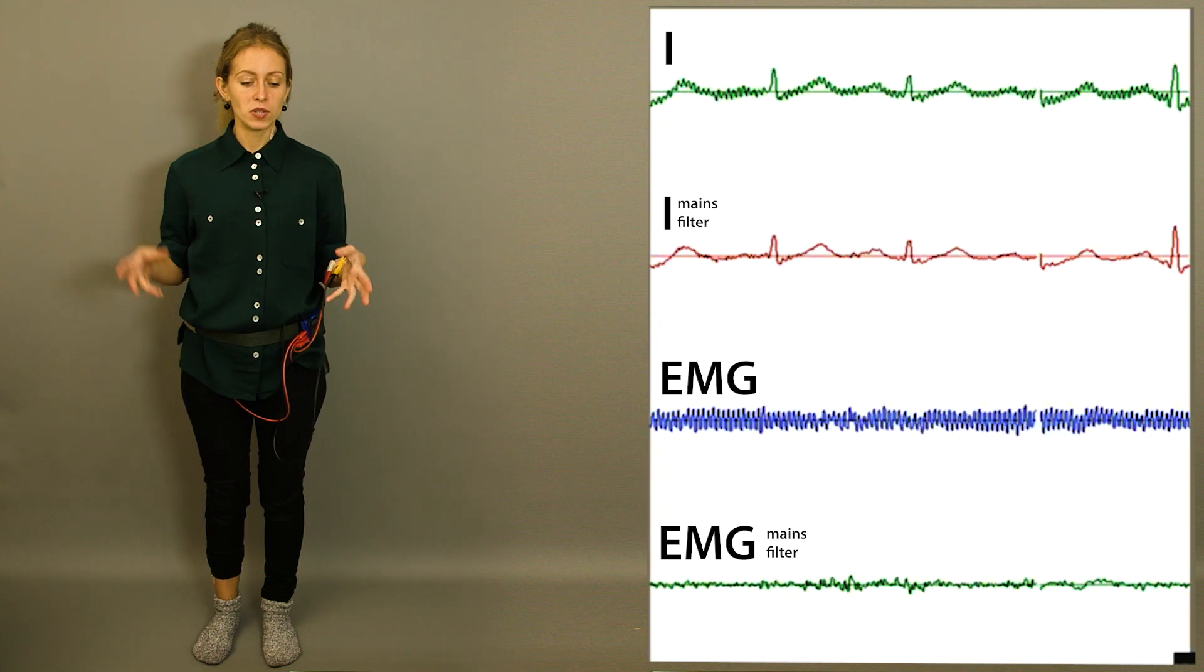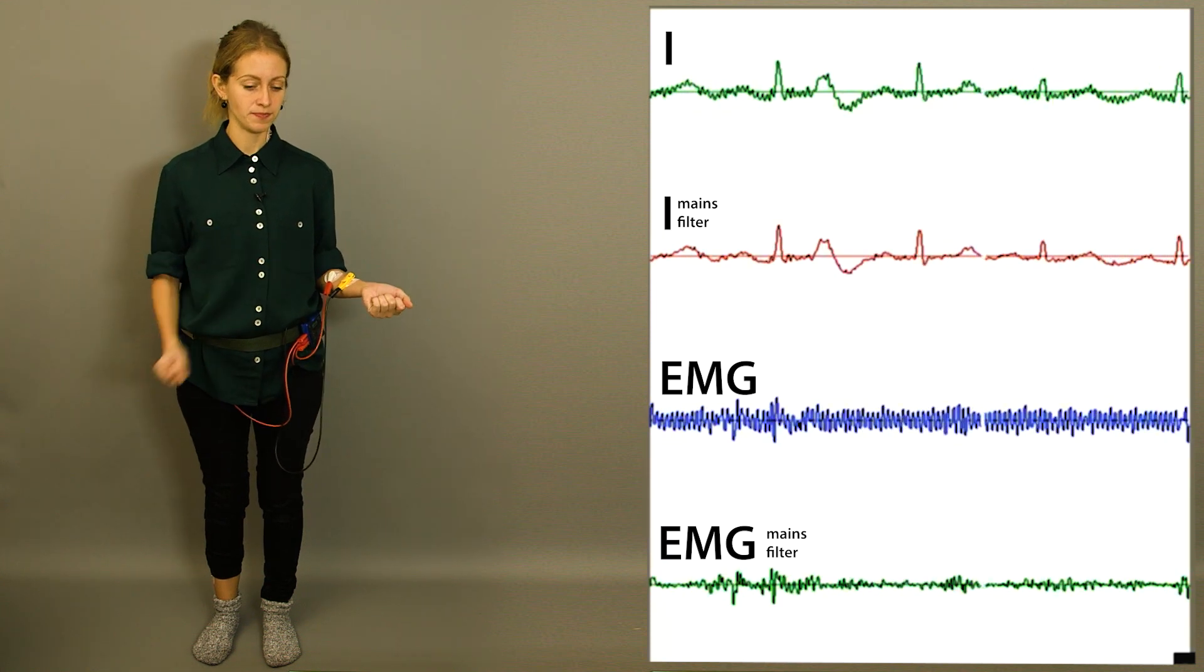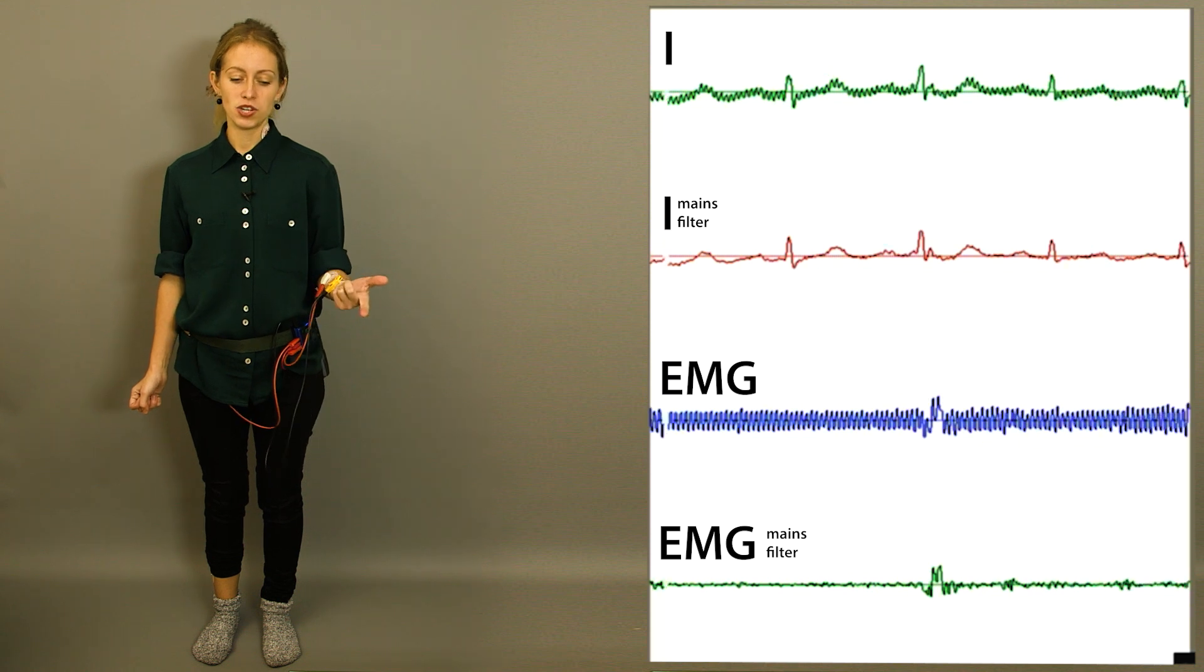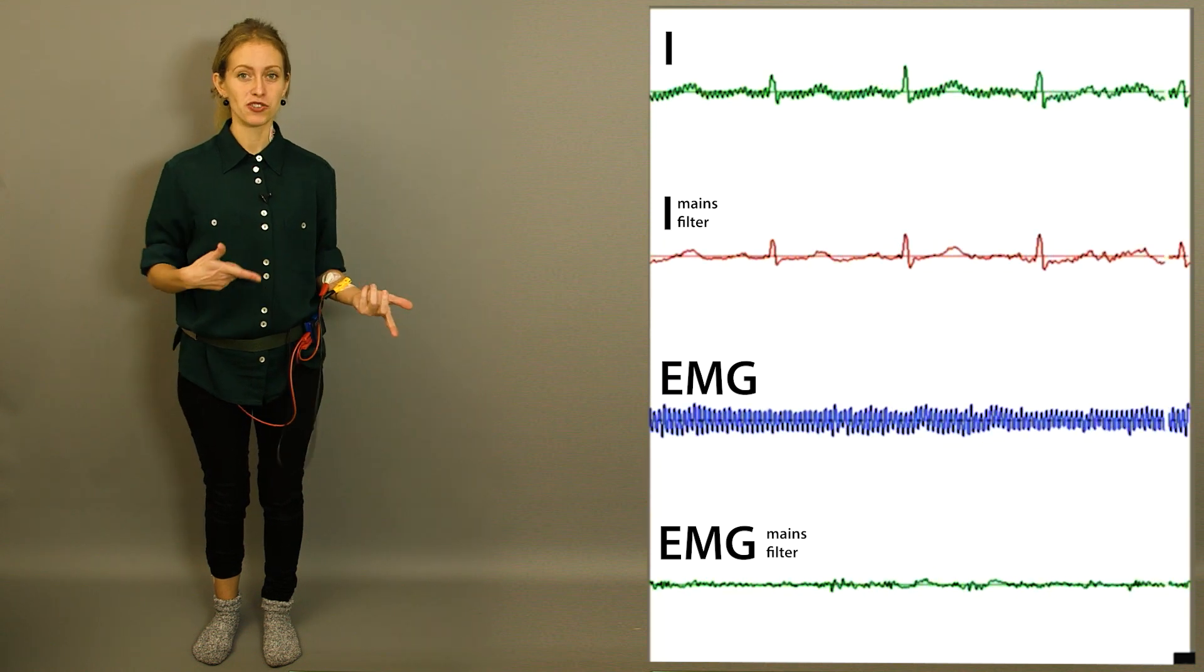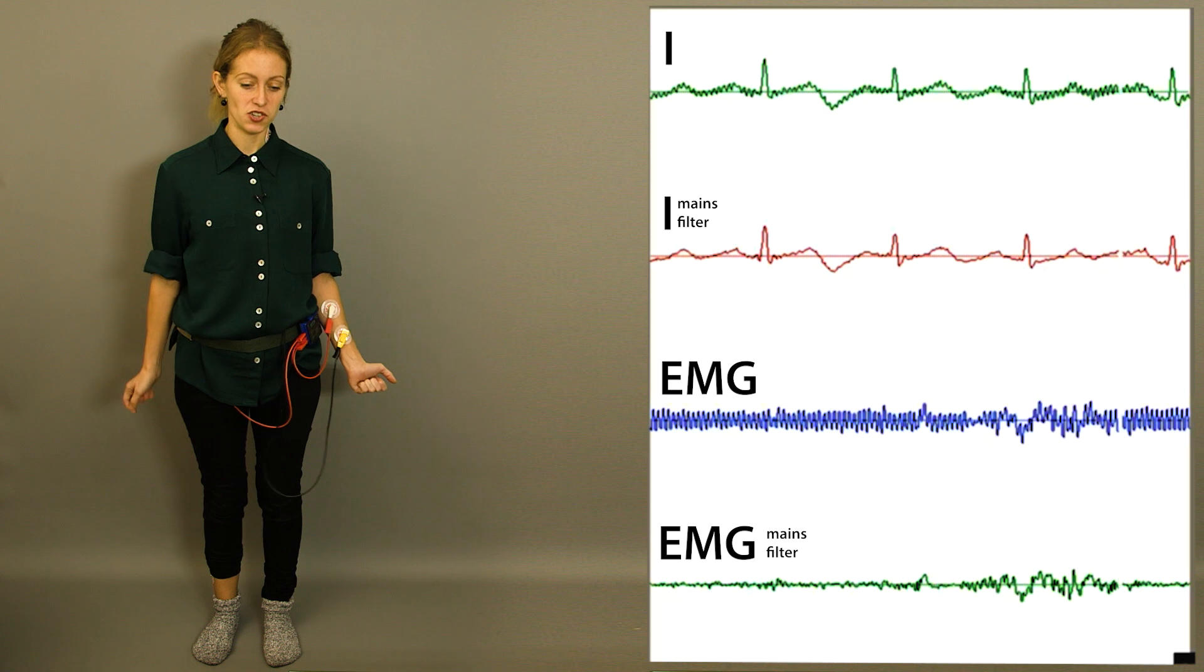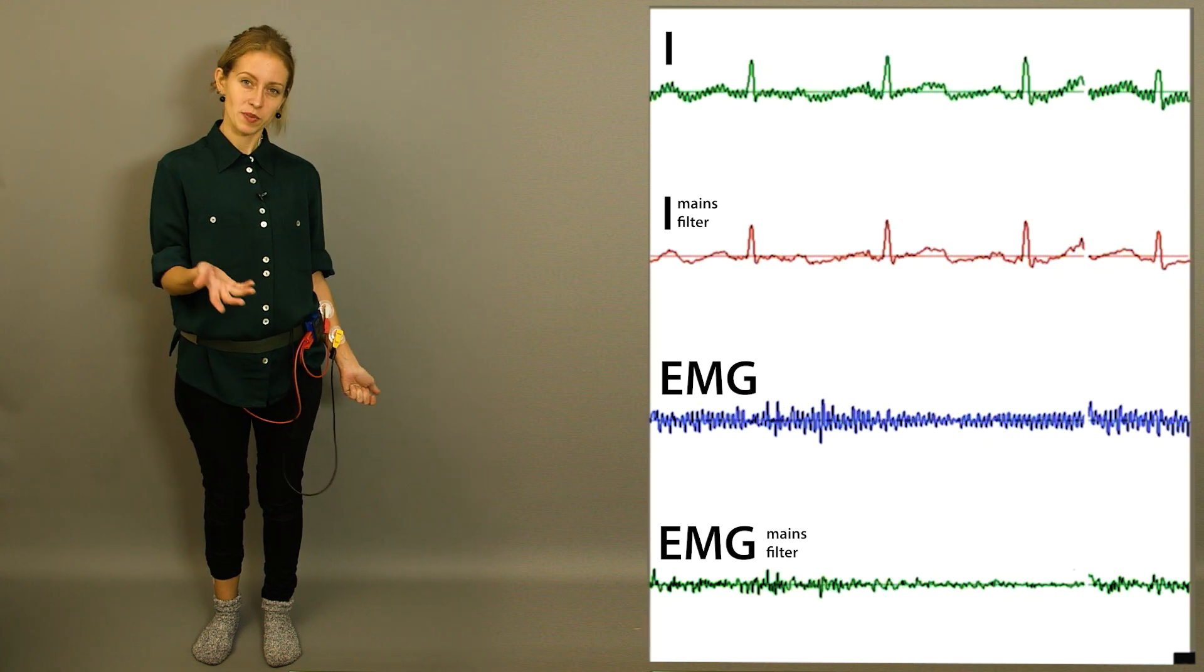So to conclude, let's compare these two. We see here that the EMG using just two electrodes has got much more 50 Hz noise, whereas the ECG is pretty clean.